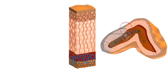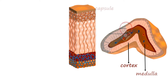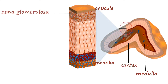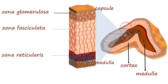On cross-section, the adrenal gland shows two distinct zones: the outer one, cortex, and the inner one, medulla. The outer cortex and the medulla secrete different types of hormones. The adrenal cortex can further be divided into three zones: zona glomerulosa, zona fasciculata, and zona reticularis.